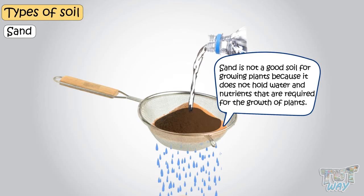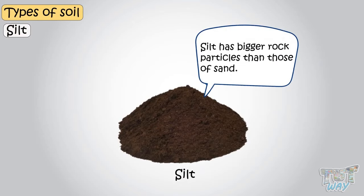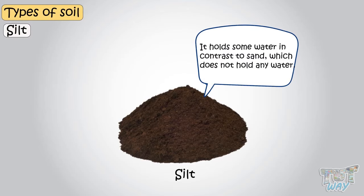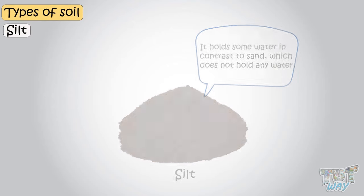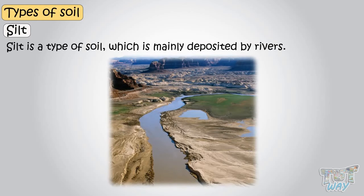Now let's see another type of soil, which is called silt. Silt has bigger rock particles than those of sand. It holds some water, in contrast to sand, which does not hold any water. Silt is a type of soil which is mainly deposited by rivers.